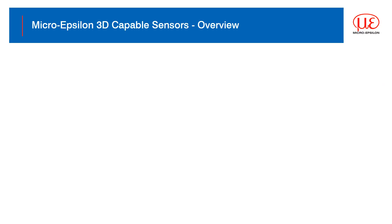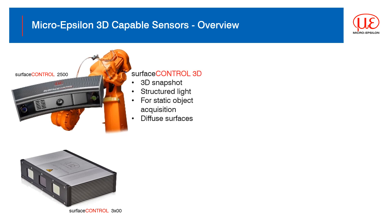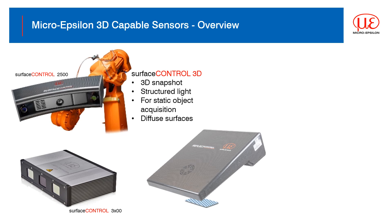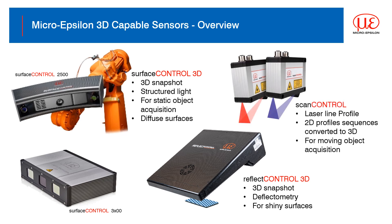Over the last 18 months MicroEpsilon has introduced and updated four product lines capable of 3D measurements. There's the Surface Control 2500 for large area 3D surface inspection, the Surface Control 3500 for high-precision 3D surface inspection, Reflect Control for 3D inspection on shiny or painted surfaces, and Scan Control which is our 2D laser line profile sensor and can also generate 3D point clouds. The use of each model is dependent on the type of surface to be measured, its size and whether that target is moving or static.